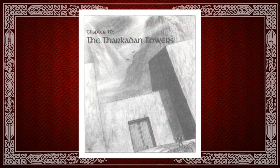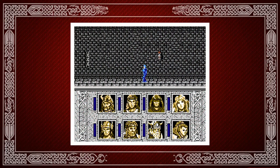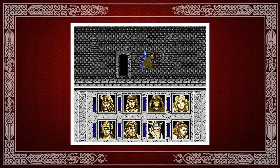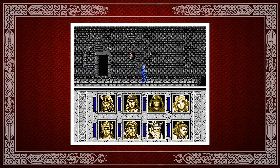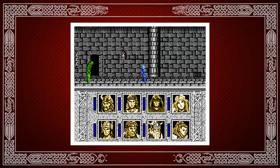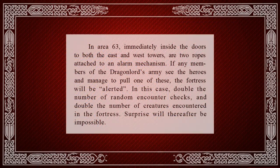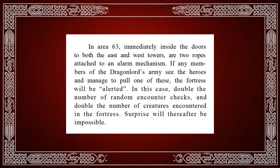Afterwards, it's onward to Pax Tharkis. Thankfully, the Pax Tharkis dungeon is a step up from the super linear first half of the module. Things will become more scripted again as the module approaches its finale, but for now the party can explore whatever rooms they want. One element the party should look out for is the bell and chain system in two key areas that serves as an alarm for the fortress. The party should make sure the Draconians don't get to pull these, or else they'll face double the amount of enemies at double the random encounter rate.